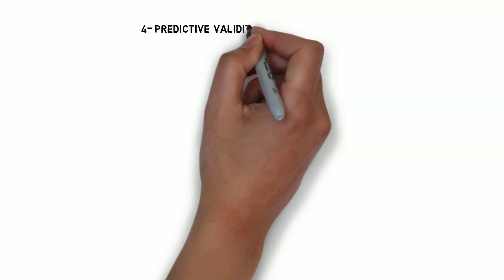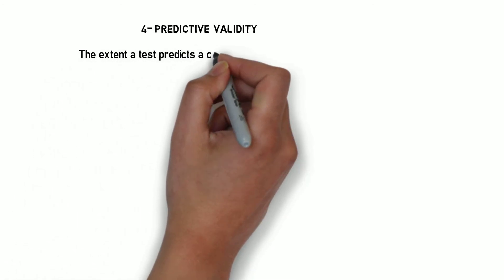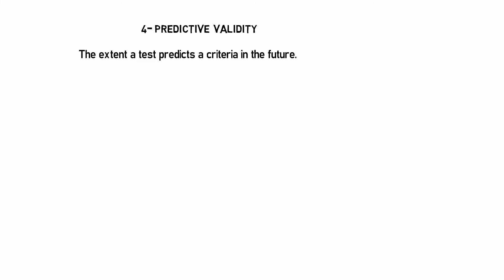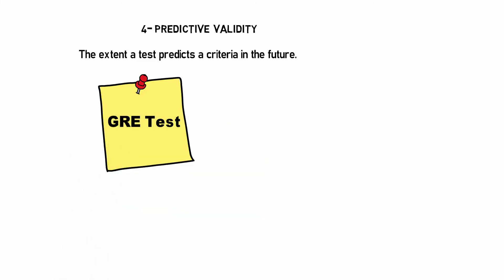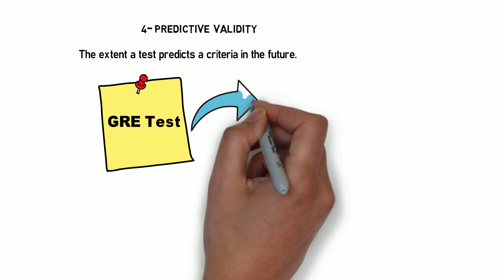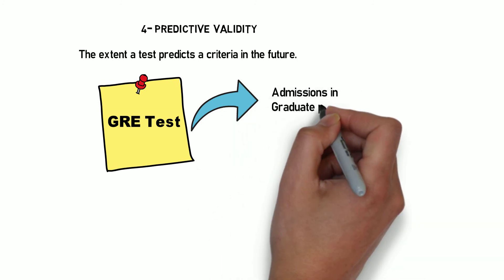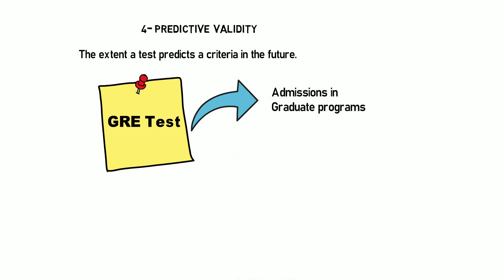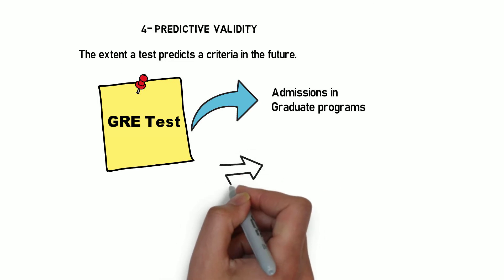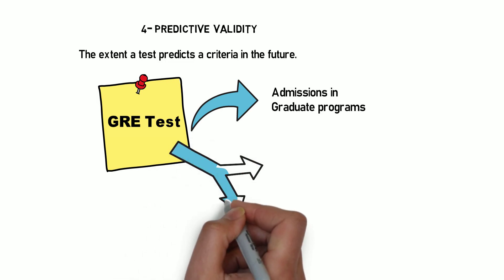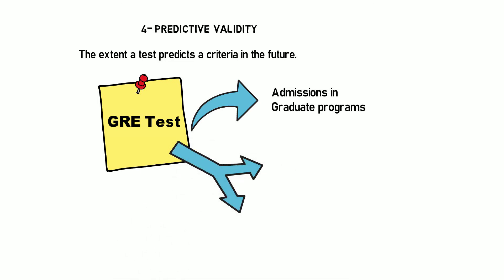The fourth and final type of validity is predictive validity. Predictive validity refers to the extent to which a test predicts a criterion in the future. Take the example of the GRE test, which is required for admission into graduate programs. The question is: to what extent does a GRE score predict the future success of students in their respective academic programs?